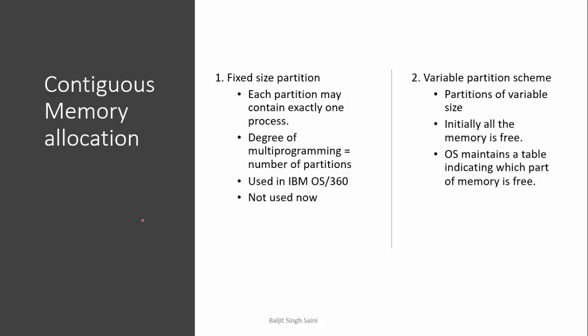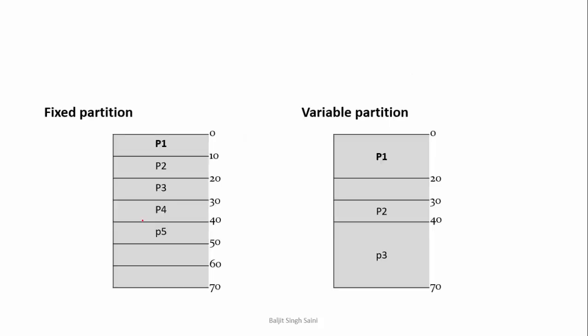The alternate is variable partitions. Variable means you do not divide the memory into fixed sizes. The entire memory is considered as one block. As processes arrive, from that block some space is allocated to the process depending upon what is the need of the process. Let me show you this with the help of an example.